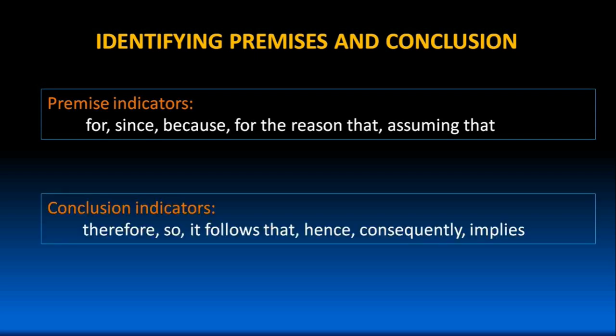And the list of conclusion indicators include: therefore, so, it follows that, hence, consequently, implies. These are just a few keywords which help us to identify the conclusion.